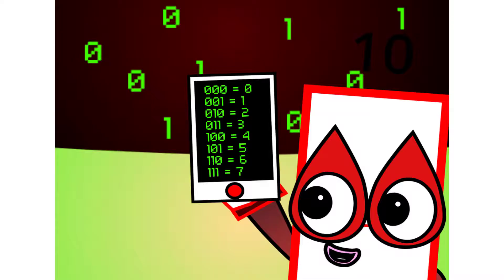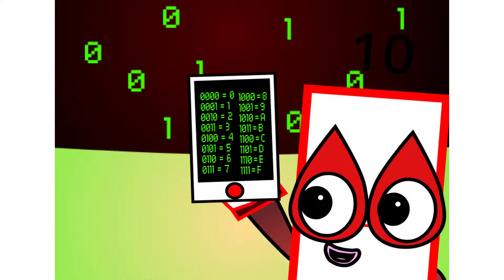There are 8 different combinations of 3-digit numbers in binary. This means that binary can easily be coded into octal. There are also 16 different combinations of 4-digit numbers in binary. This means that binary can easily be coded into hexadecimal too.